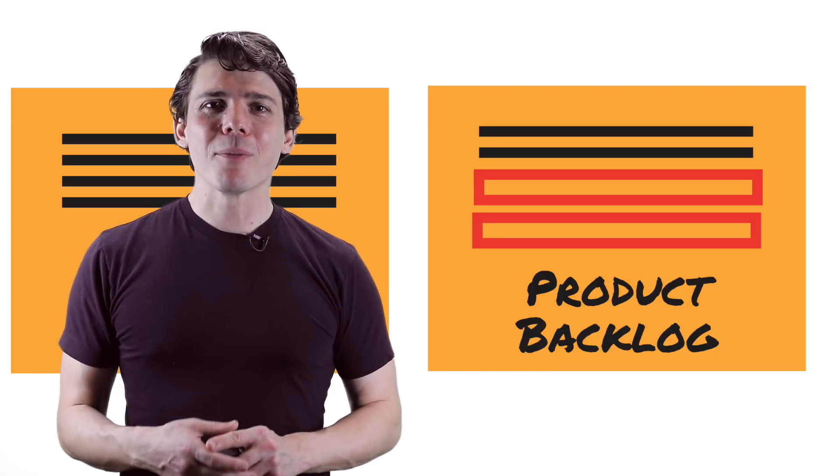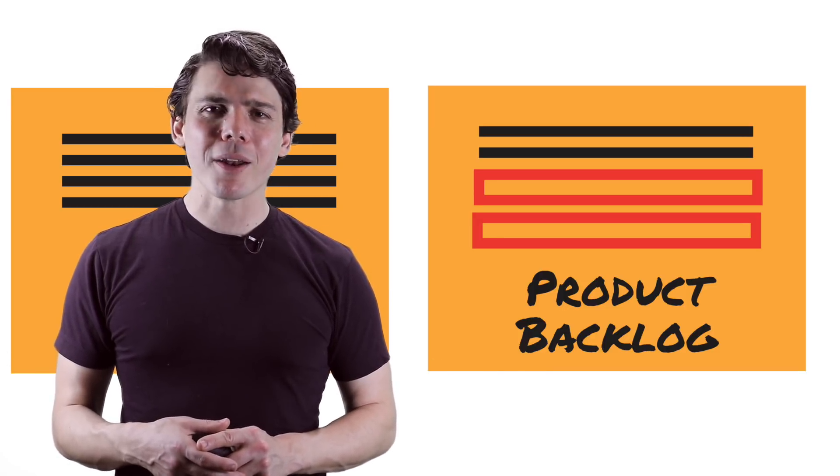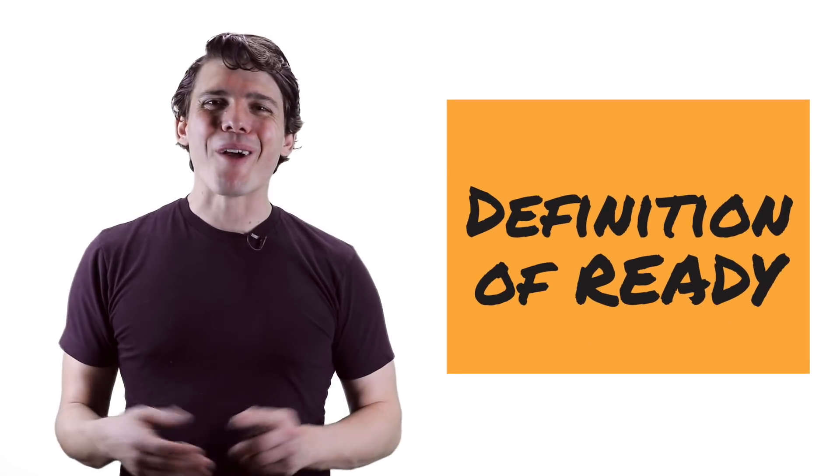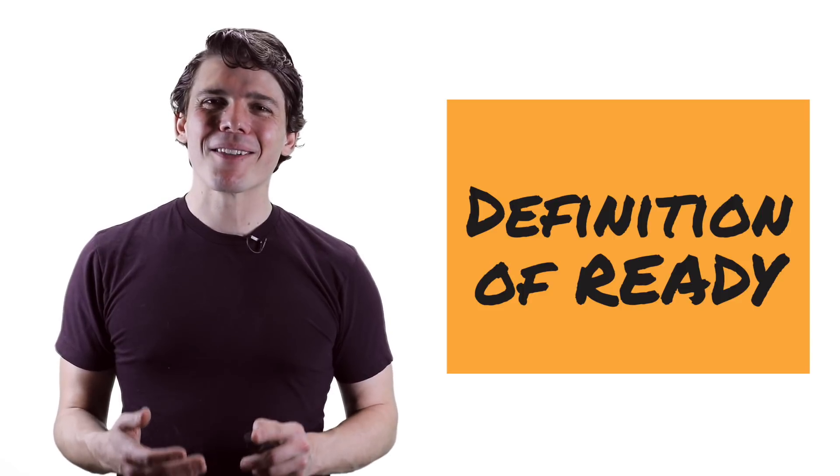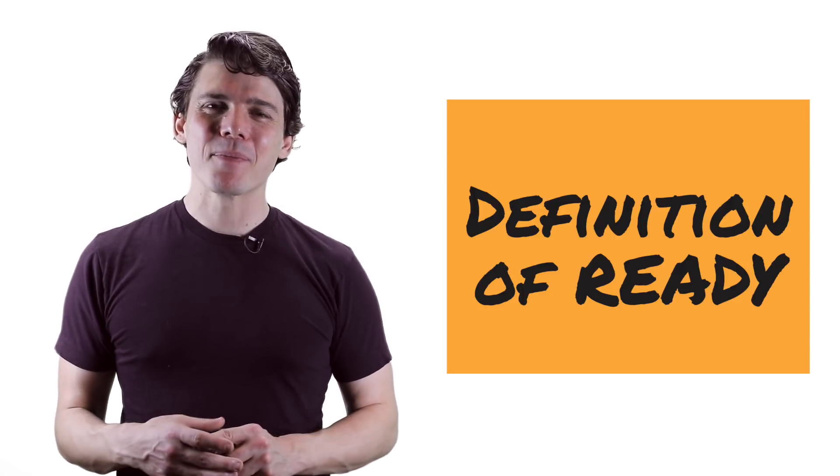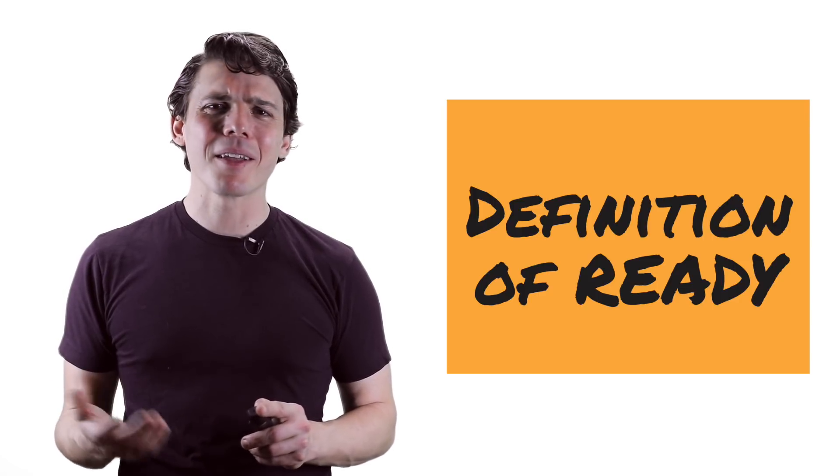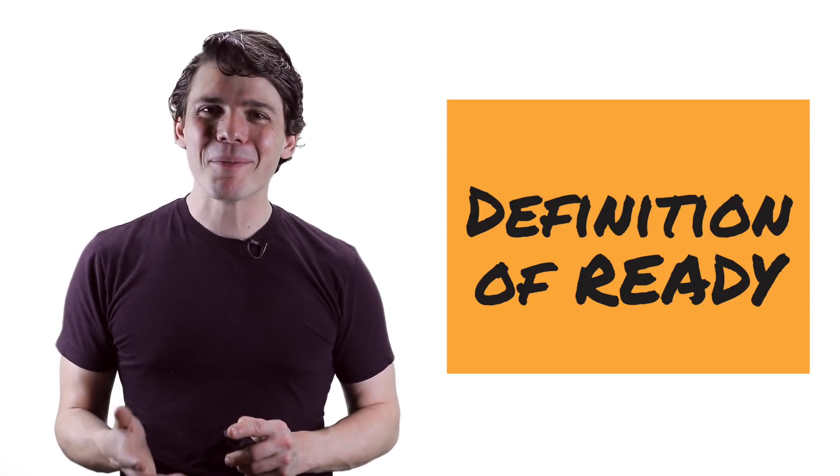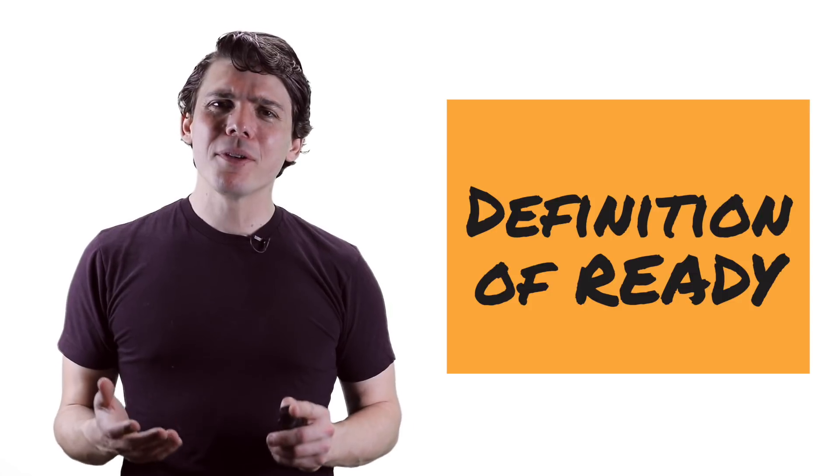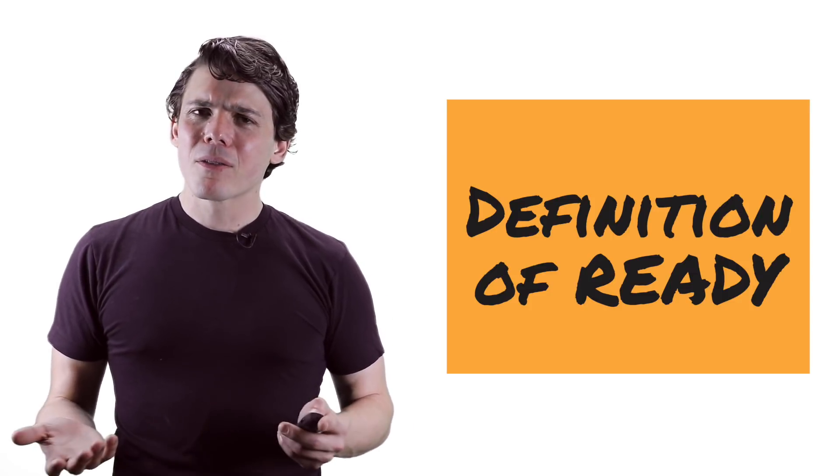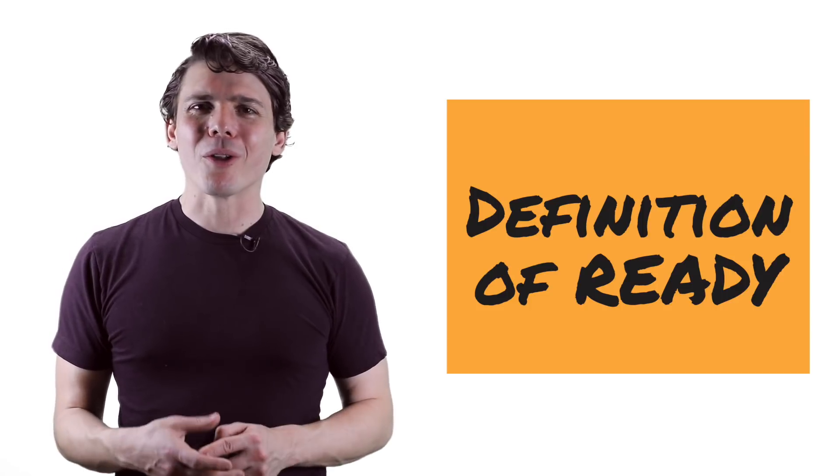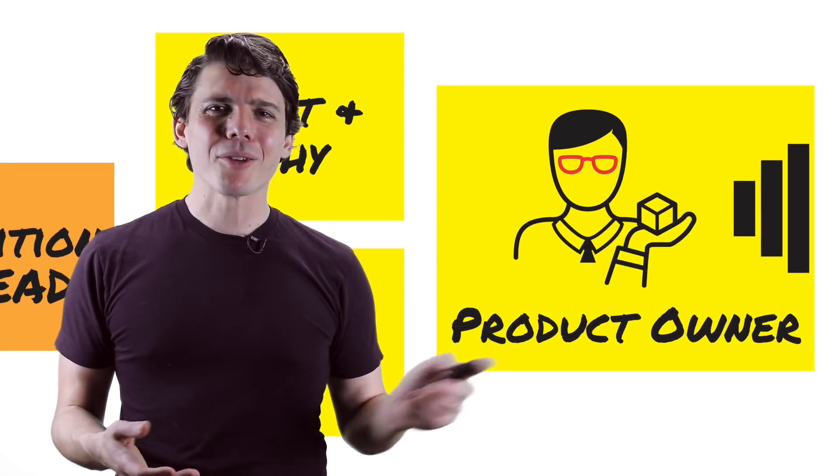Notice how some of the work on your product backlog will be ready to work on while some isn't. How do we prevent items from making it onto the sprint backlog before they're ready? We use a definition of ready, a documented team agreement that specifies the conditions that must be met, such as being the right size and having clearly articulated acceptance criteria that the team understands, before the team pulls the item into the sprint backlog.